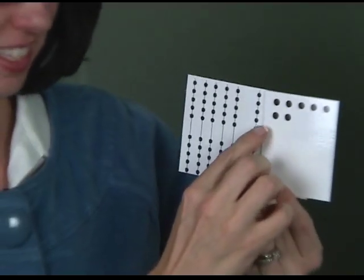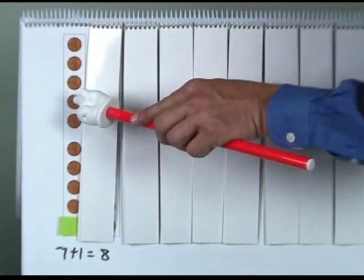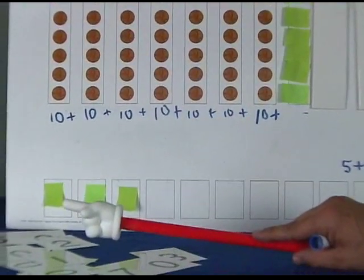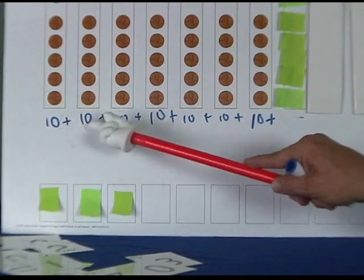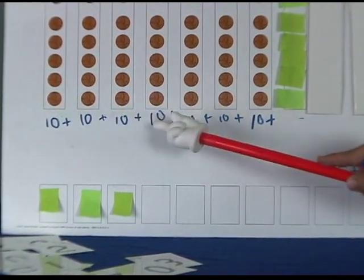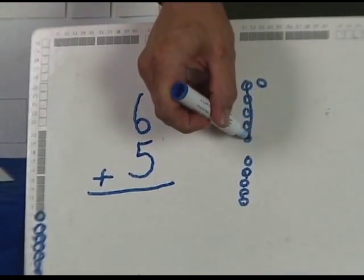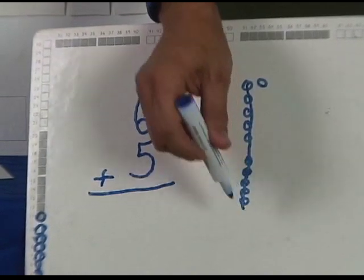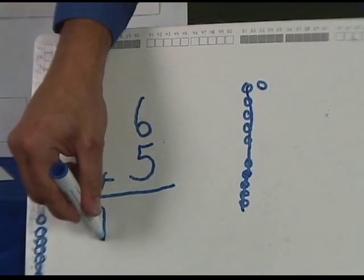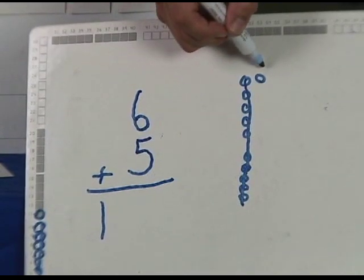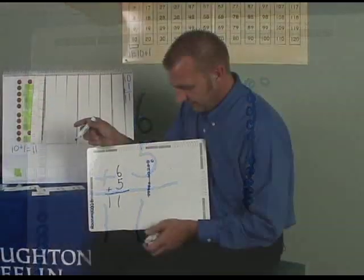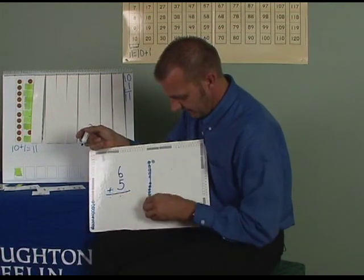This routine helps children learn to say 2- and 3-digit numbers, become skilled at counting, and helps them link money values with numeric values. This routine should be done every day while working on the odd-numbered units and may be continued during the mini-units as well. Each day, a new total is created by adding a new number from 5 to 9 to the total from the previous day. Refer to the blue box shown on Roman numeral page 23 in Volume 1 of your teacher's edition.